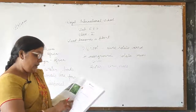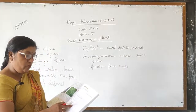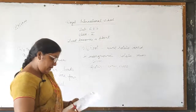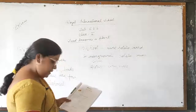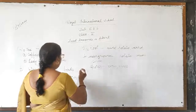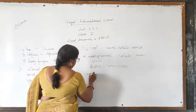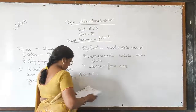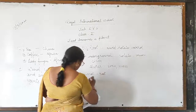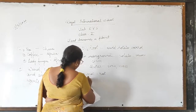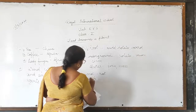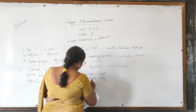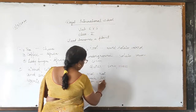Now name the edible part — root, stem, leaves, and fruit — of the following. Question number 7. Carrot: the edible part is root. Spinach: the edible part is leaf. Onion: the edible part is stem.